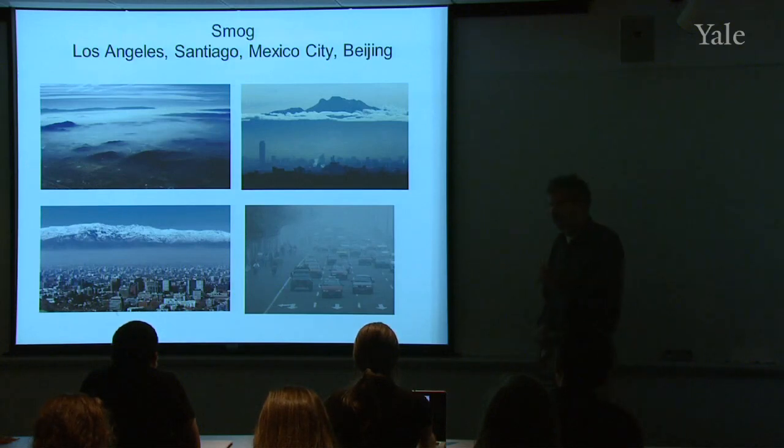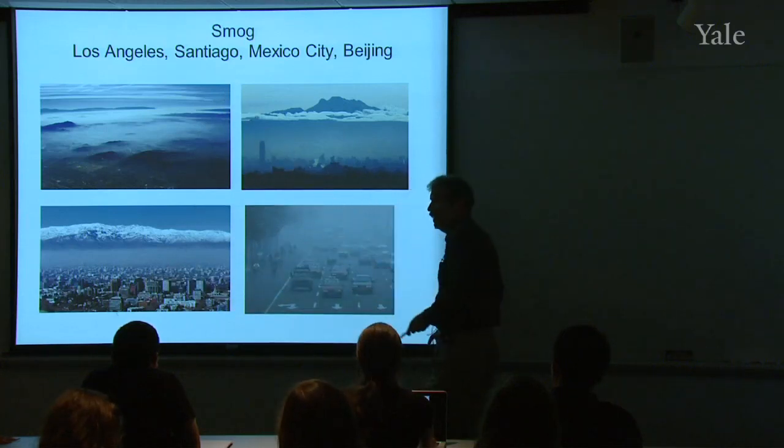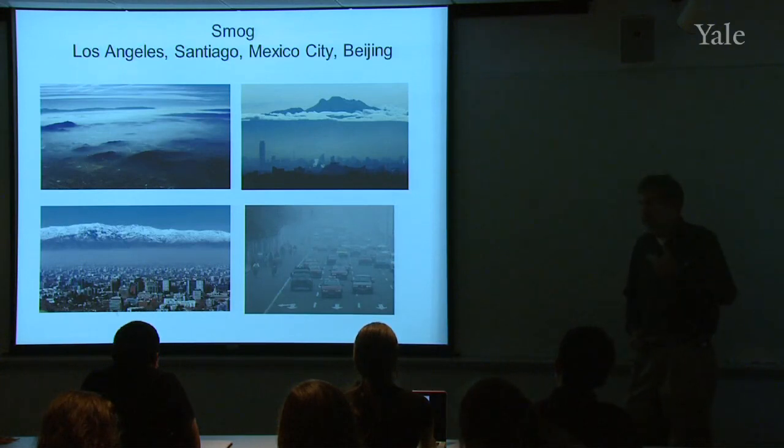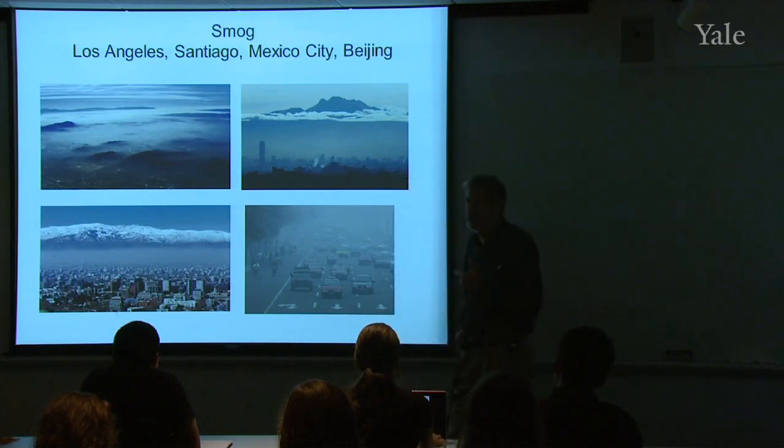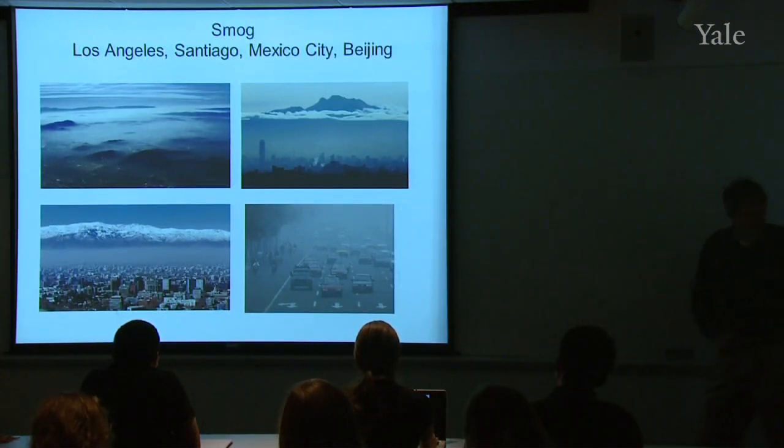If the inversion was not there, this pollution could just quickly mix up into the free atmosphere. It would be much more completely diluted, and you wouldn't have the concentration of sulfur dioxide, and NO, and ozone, and so on, that you have in these polluted episodes.